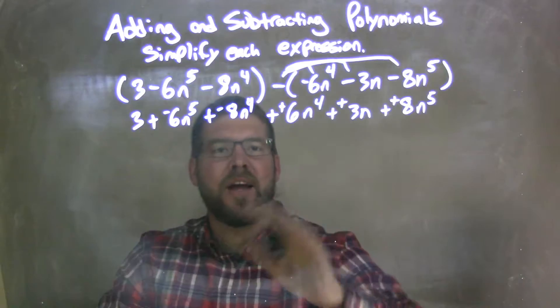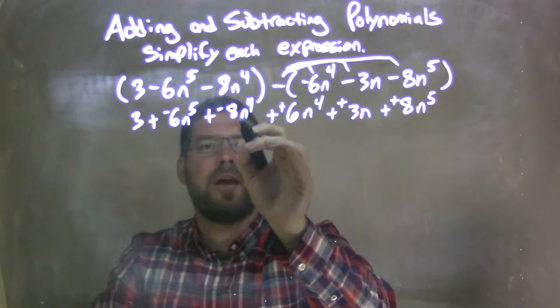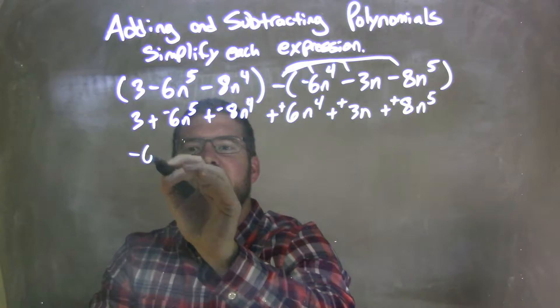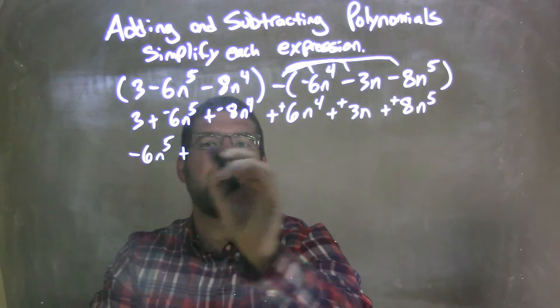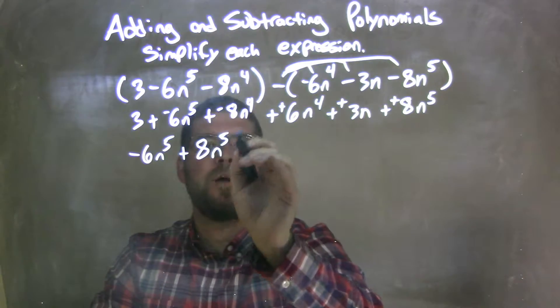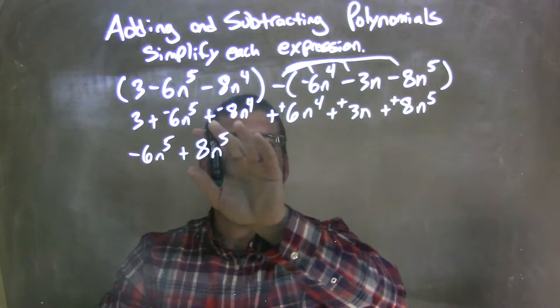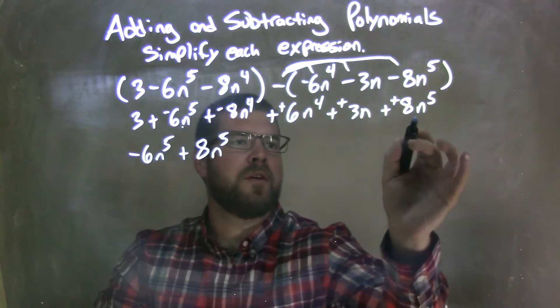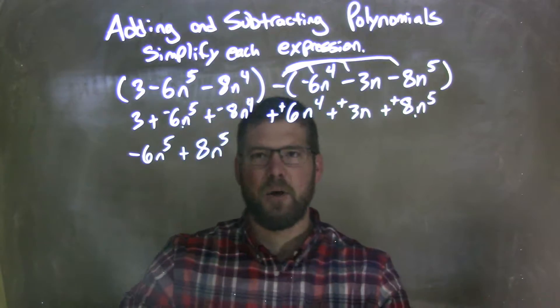So now I have everything written out with addition here. I'm going to put my like terms together and my highest degree first. So I see a 5th power is the highest one. So we have negative 6n to the 5th plus right here I'm putting on this 8n to the 5th. I'm rearranging using the commutative property.